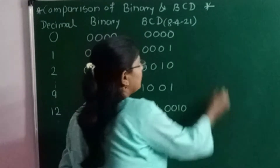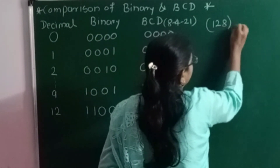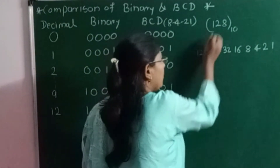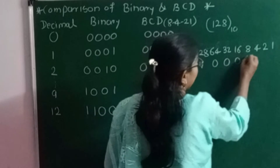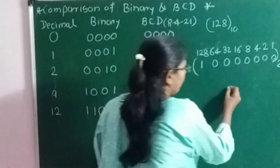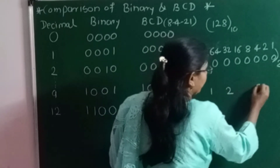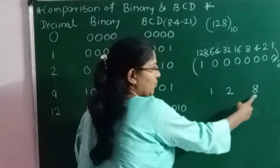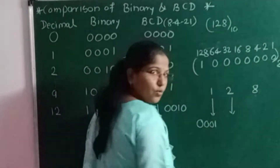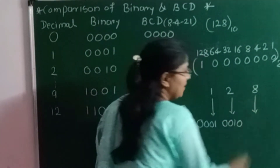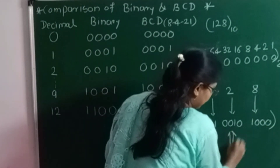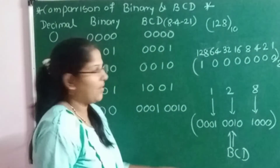Now let me take one more example. Suppose I want to represent 128 in binary as well as BCD. The binary equivalent is 10000000 — writing 1 for the 128 weighted position and 0 for the remaining positions. Now for BCD, I write the BCD equivalent for each digit: 1 is 0001, 2 is 0010, and 8 is 1000. So this is the BCD equivalent for decimal 128.